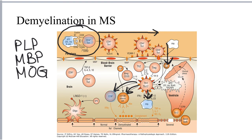Activated macrophages are responsible for direct damage to myelin following the release of various inflammatory cytokines like TNF-alpha, interleukin-1, and reactive oxygen species. Oligodendrocytes are damaged by both macrophages and CD8-positive killer T cells. In addition, B cells are also activated as part of this response, and activated B cells and plasma cells are responsible for some of the damage in MS as well.